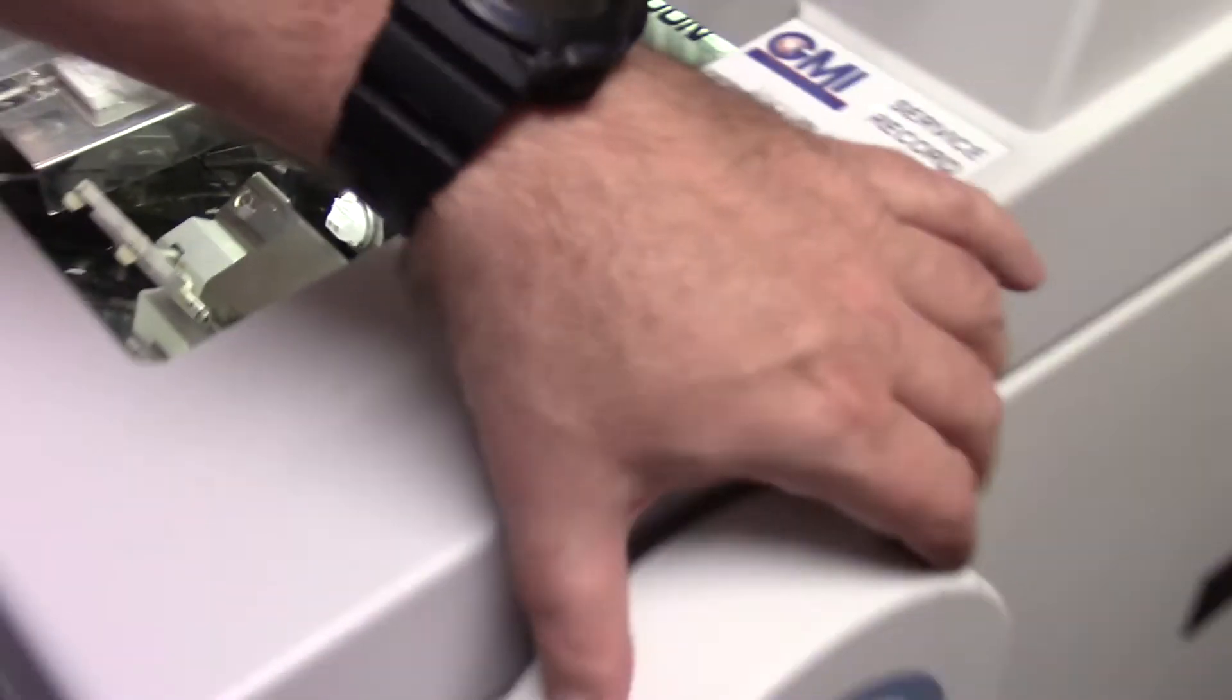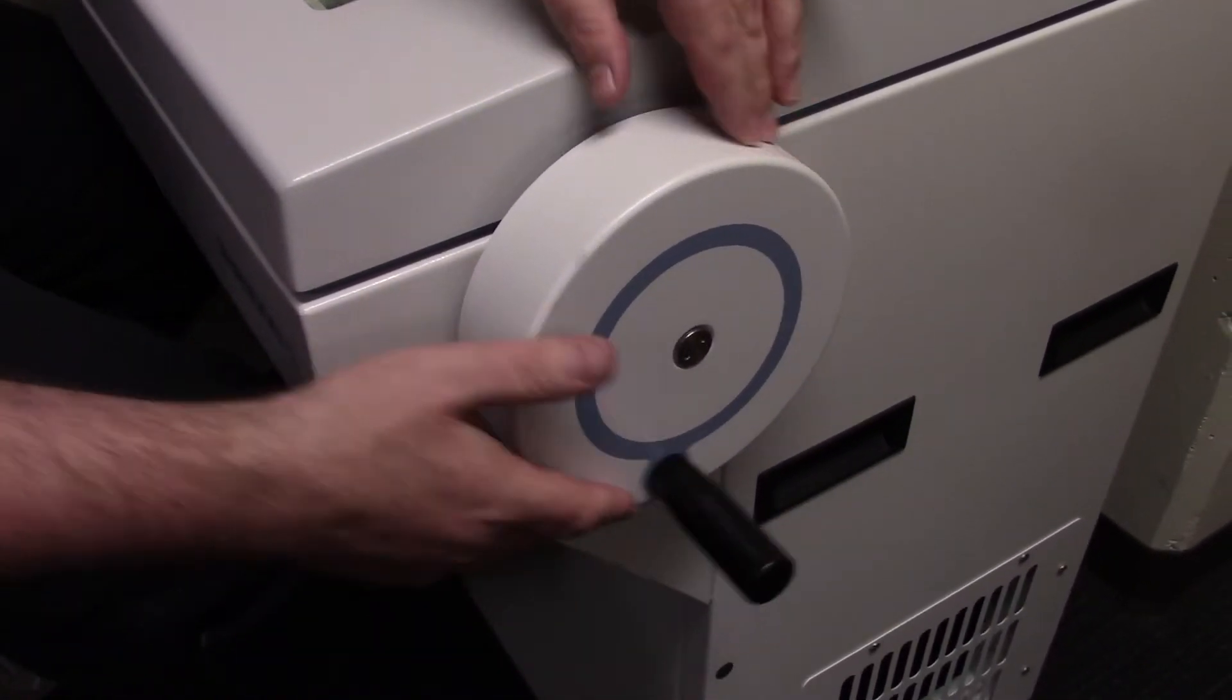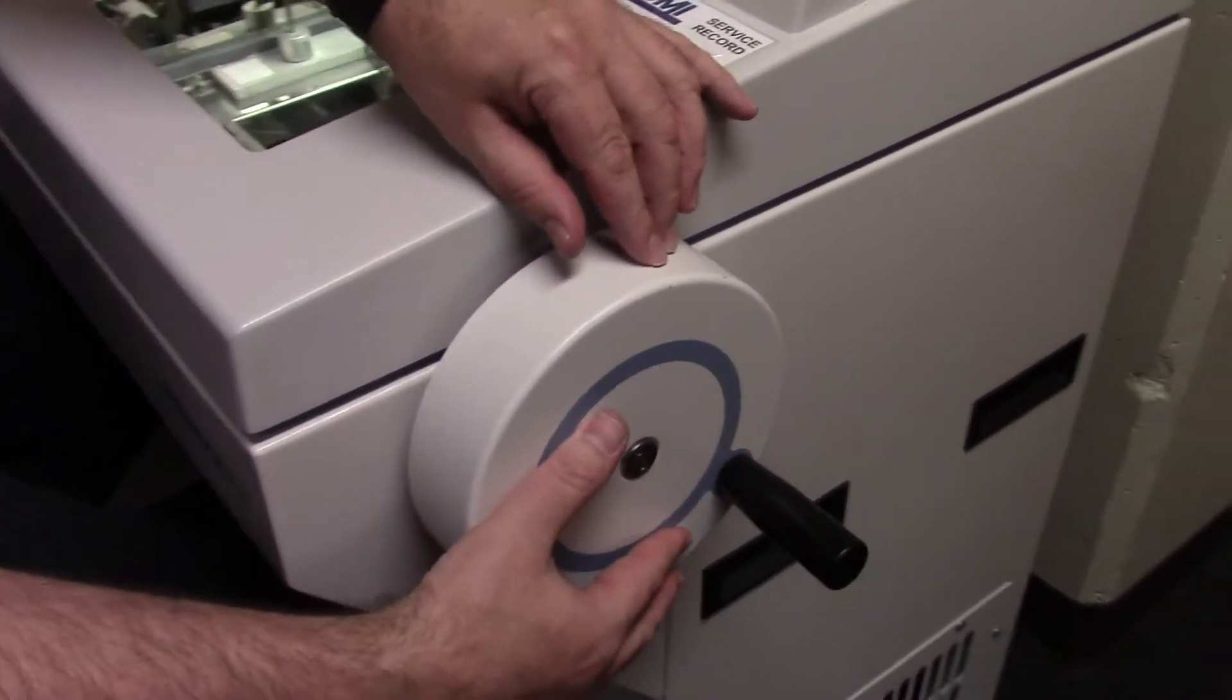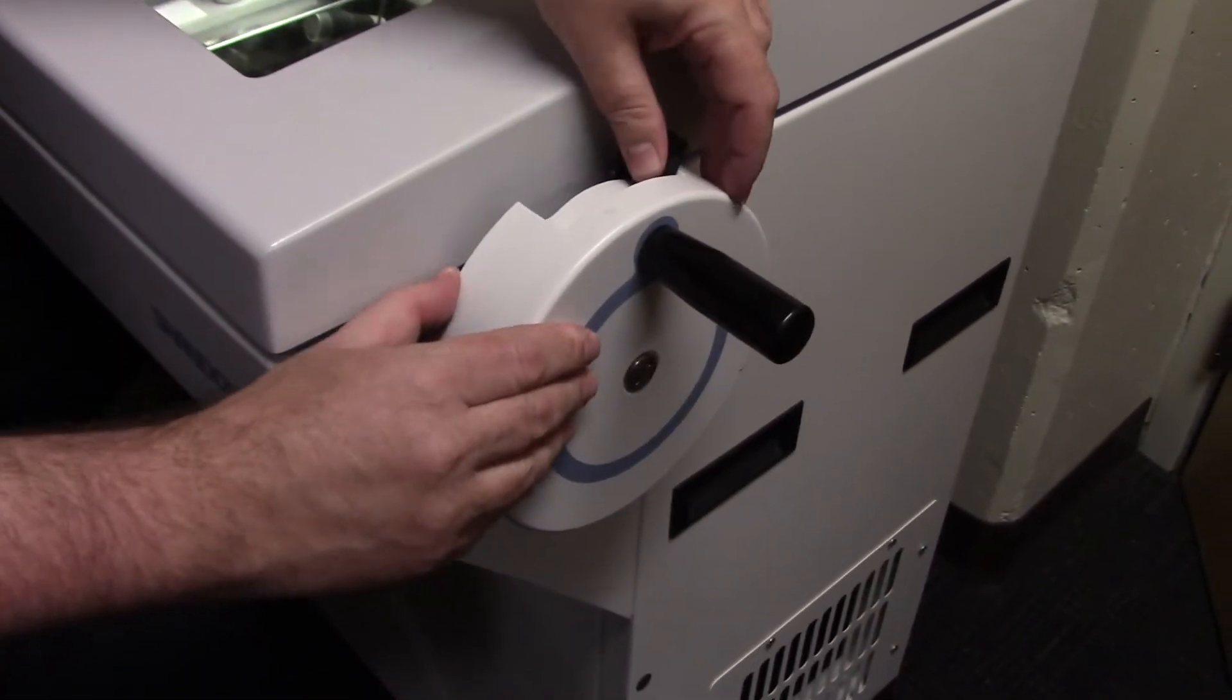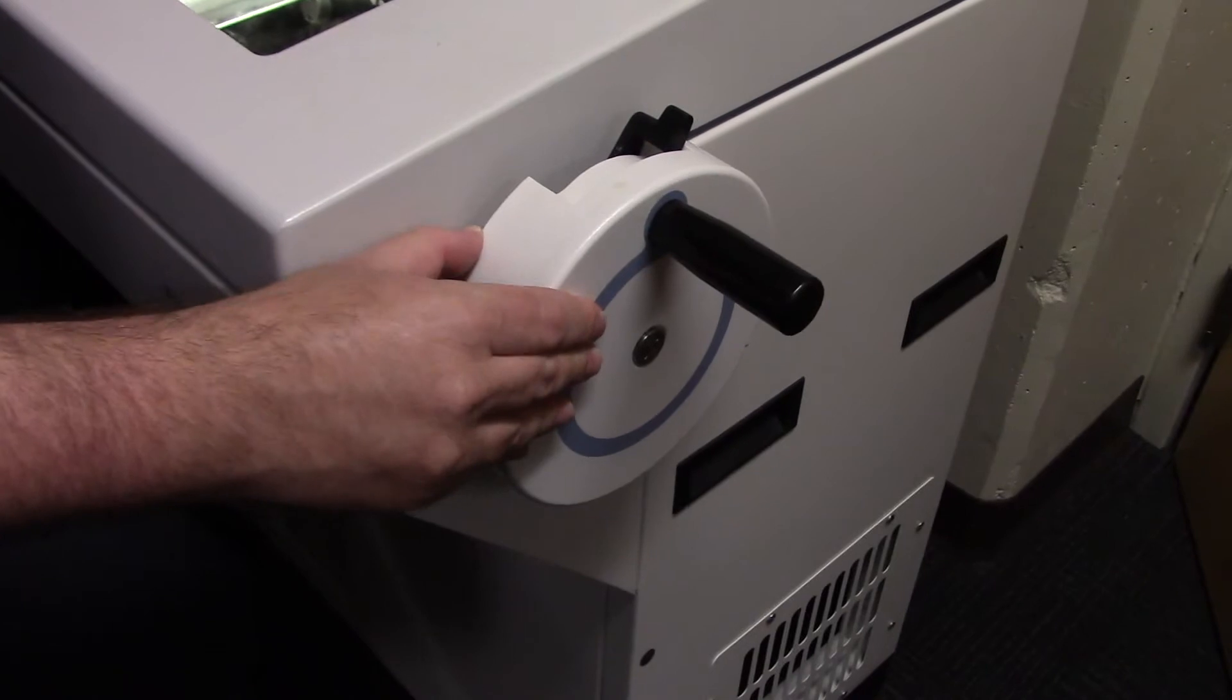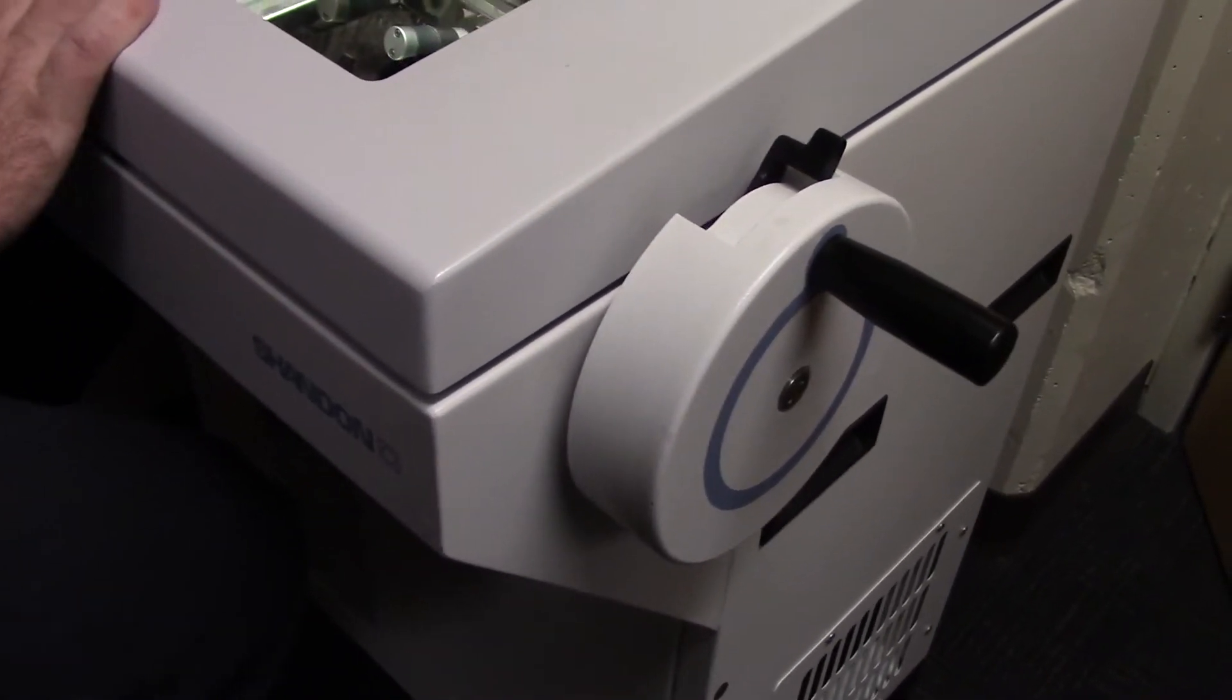First of all, what I'm going to do, if you can look at the wheel over here, if I put the wheel with the handle towards the top, this is a locking mechanism. Now I cannot move the chuck.